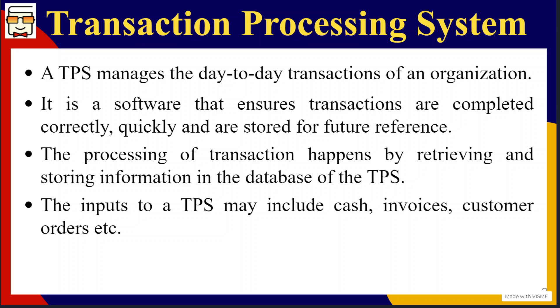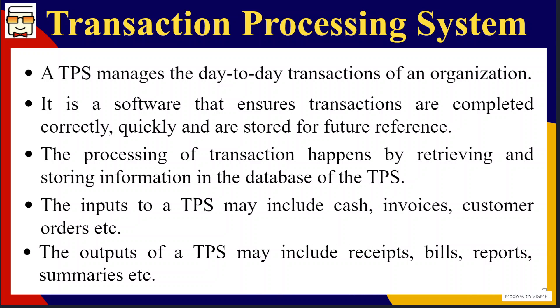In different scenarios there can be different inputs to a transaction processing system. For example, you can give cash to buy a product or service, you can present an invoice to get a product, or you can give orders so that a service is provided to you. Outputs include receipts, bills, reports, etc. Cash can be an input when paying for a product, but in the case of an ATM where you are doing a financial transaction, the cash is the output and the input is the debit card that you present.